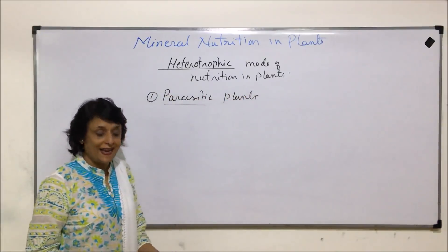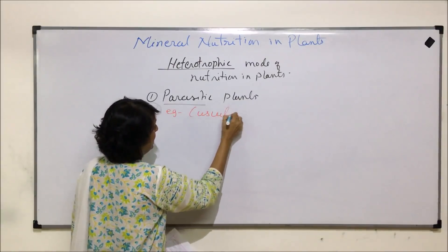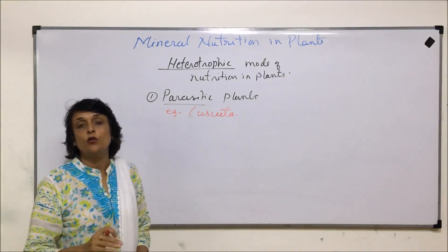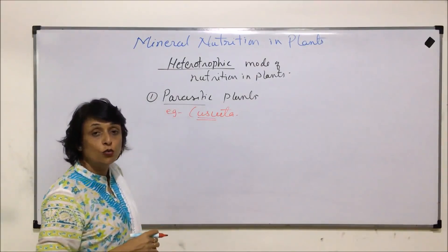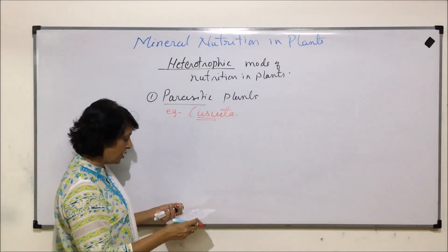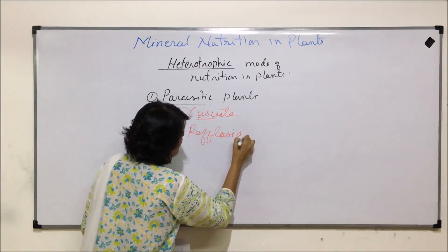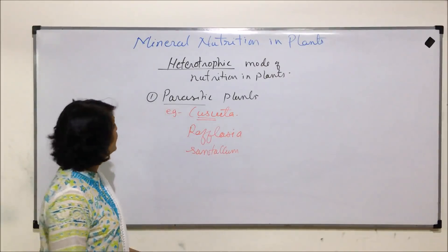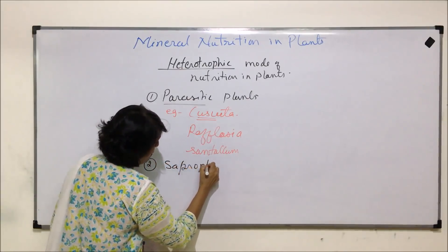Certain plants obtain their nourishment directly from the host plant. The example is Cuscuta, which absorbs complete nourishment from the host plant - both water and food. This is a parasitic plant and it has haustoria or parasitic roots with the help of which it takes nourishment from the host plant. Then there is Rafflesia, which is a partial root parasite, and Striga, which is also a partial root parasite.